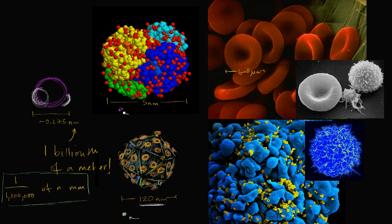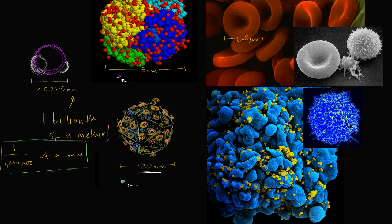Now let's go up to the next scale. This creepy picture right over here is a T cell. All the blue is the T cell, and what you see in yellow is the HIV virus emerging and taking advantage of this T cell — using that cell's machinery to reproduce itself. You can immediately see on this picture how small the HIV virus is compared to the actual T cell. Each of these small little things is an HIV virus, which we already saw is a lot bigger than something like a hemoglobin protein. On this scale, a hemoglobin protein would maybe be a pixel, if that.